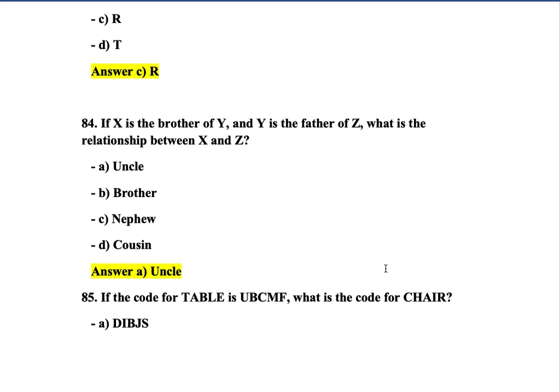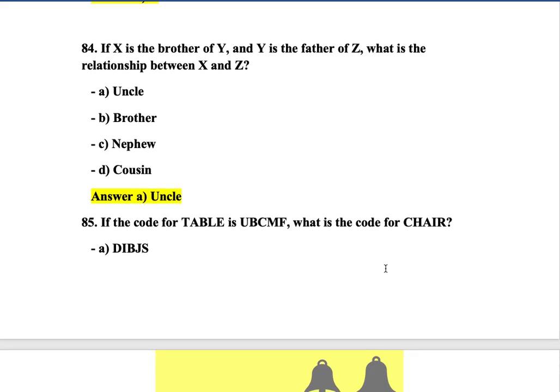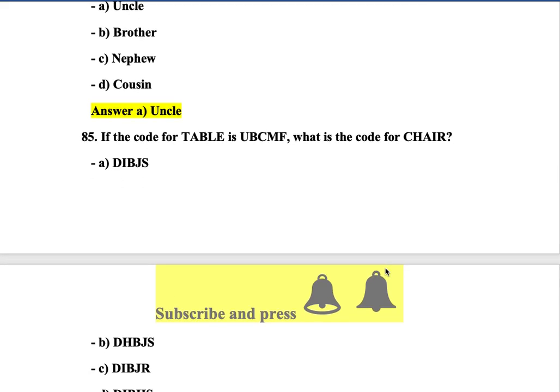Question 84: If X is the brother of Y and Y is the father of Z, how is X related to Z? The correct answer is uncle — option A.